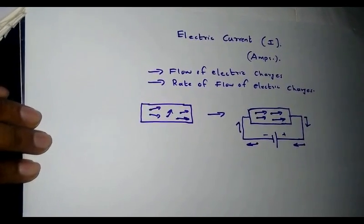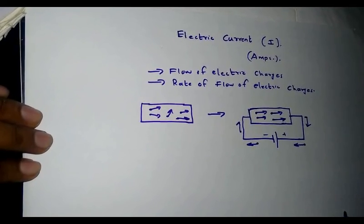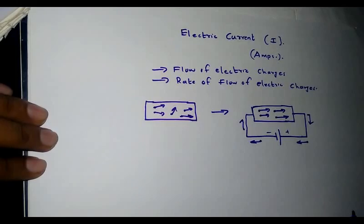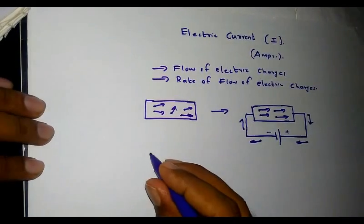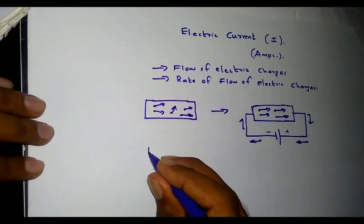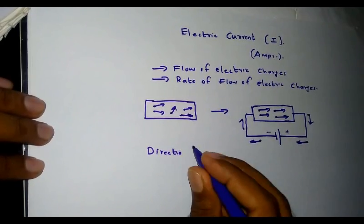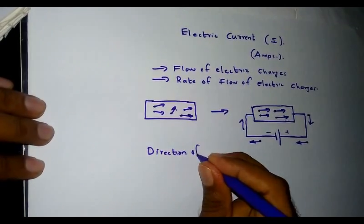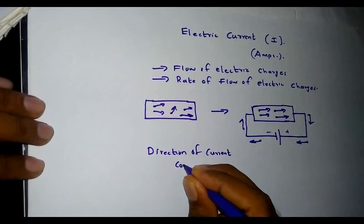So the direction of flow of electrons is from the negative to the positive terminal of the battery. The direction of flow of actual current is also from the negative to the positive terminal, but we always consider the conventional direction of current.